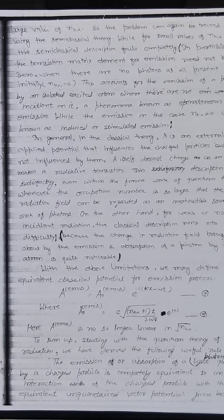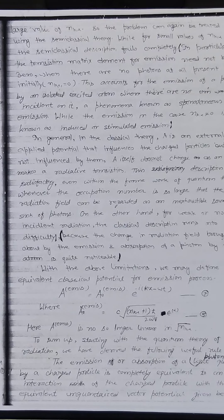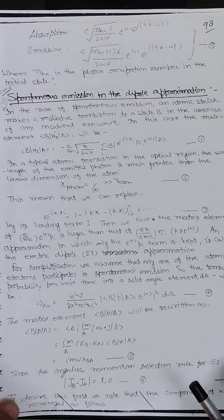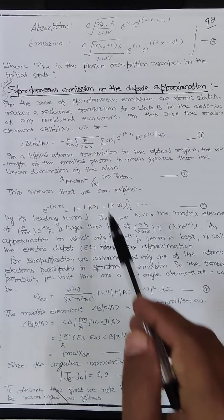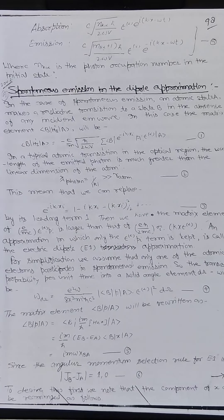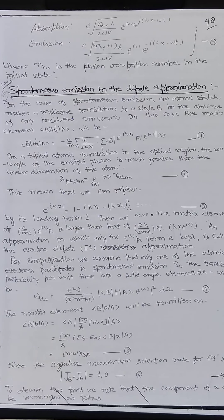To summarize, starting with the quantum theory of radiation we have derived the following useful rule: the emission or absorption of a photon by a charged particle is completely equivalent to an interaction of the charged particle with an equivalent unquantized vector potential. For absorption: A_absorption = c√(n_{k,α} ℏ / 2ωV) · ε_α · e^{i(k·x - ωt)}. For emission: A_emission = c√((n_{k,α}+1) ℏ / 2ωV) · ε_α · e^{-i(k·x - ωt)}.